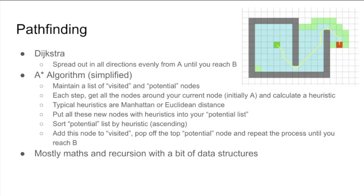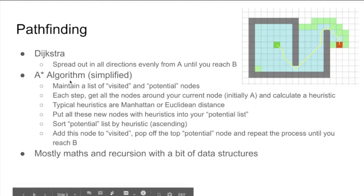There's a slightly massively improved version of this, where you perform the same kind of iteration, except when you make a decision about which node you're going to check next, you calculate a heuristic for that node — essentially, if you imagine drawing a right-angled triangle between that node and point B, and calculating the hypotenuse, or the Euclidean distance between the two. You calculate this for all the nodes you've just scanned, then sort them and put them on a potential nodes stack. This kind of steps you through at a high level how that works.